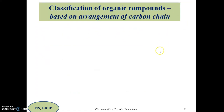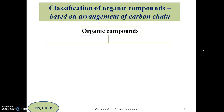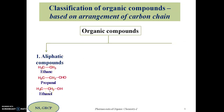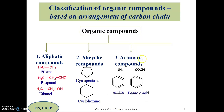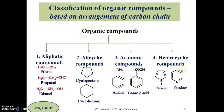So, till now we have discussed the classification of organic compounds based on the arrangement of the carbon chain. To summarize: aliphatic compounds (open chain carbon), alicyclic compounds (carbon atoms in cyclic ring form), aromatic or benzenoid compounds (structure and properties similar to benzene), and heterocyclic compounds (a heteroatom other than carbon present in the cyclic ring system).